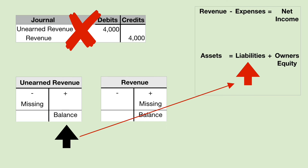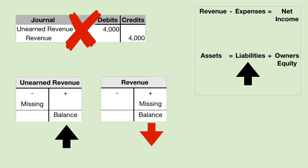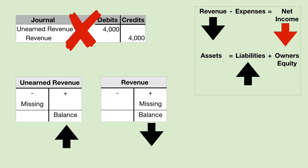That error will transfer to the balance sheet as liabilities being overstated. Next, let's look at the revenue account. The revenue account is missing a credit that should have been added in that total, so the total is missing a number and therefore the balance is understated. That understatement of revenue transfers to the income statement. If revenues are too small or understated and you subtract the correct expenses, your answer is still going to be understated — net income is understated. Net income will be transferred to retained earnings at the end of the year in the closing process, so that understatement of net income leads to an understatement of owner's equity.